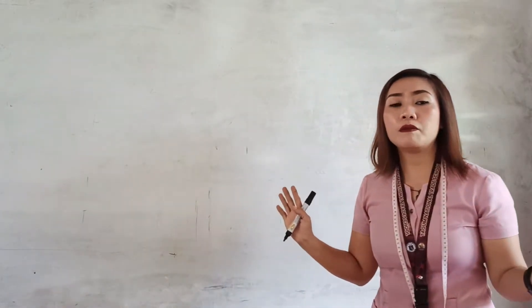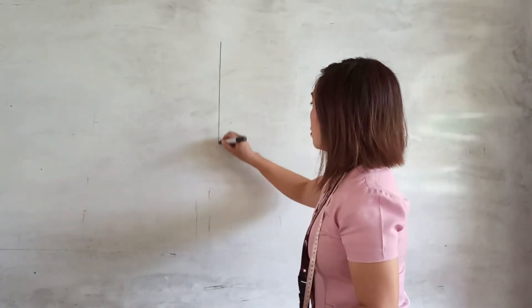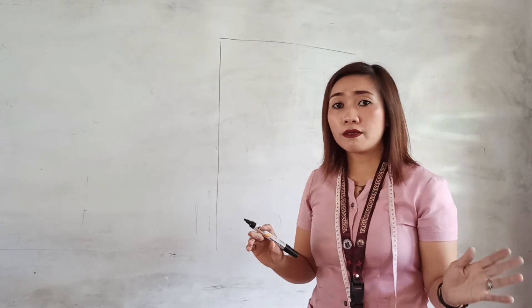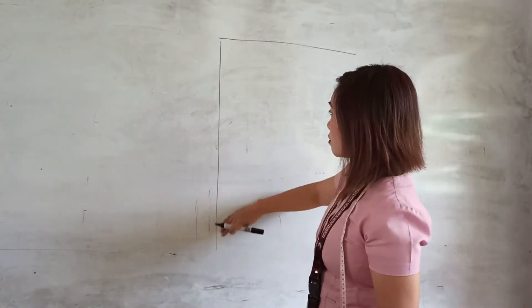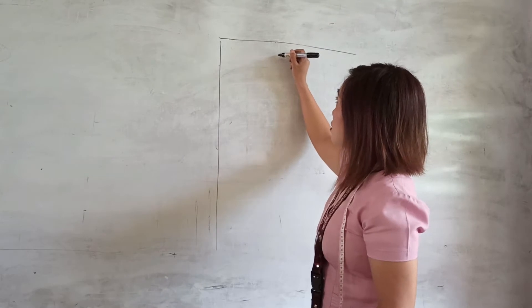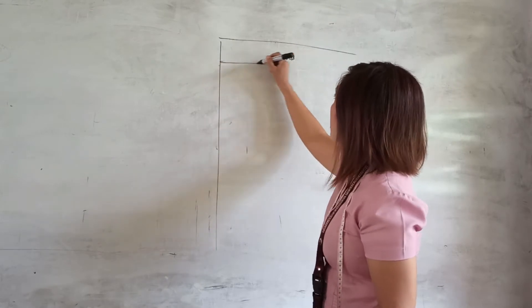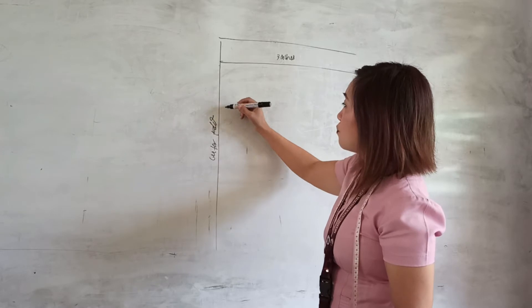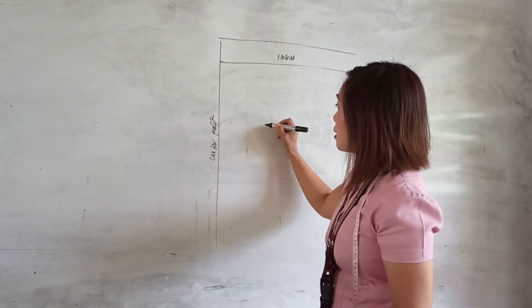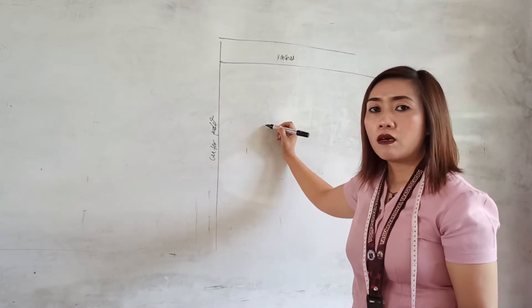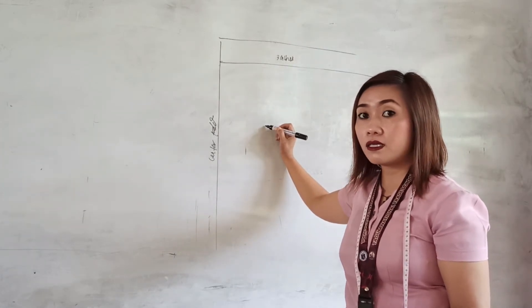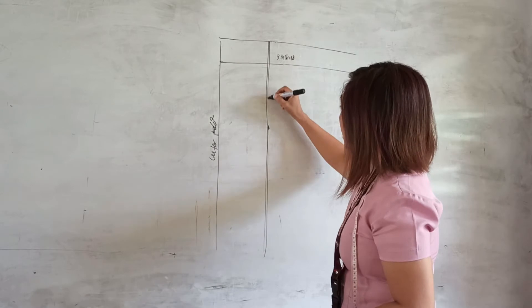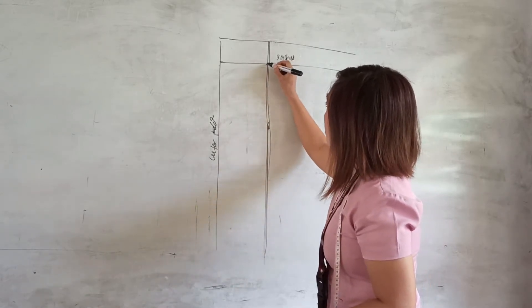To start drafting the blouse pattern, fold your pattern paper crosswise, making sure we have a center fold. From the center fold, measure downward three inches for our allowance. Now from the center fold going to the right, we measure five to eight inches and square the line for our allowance.